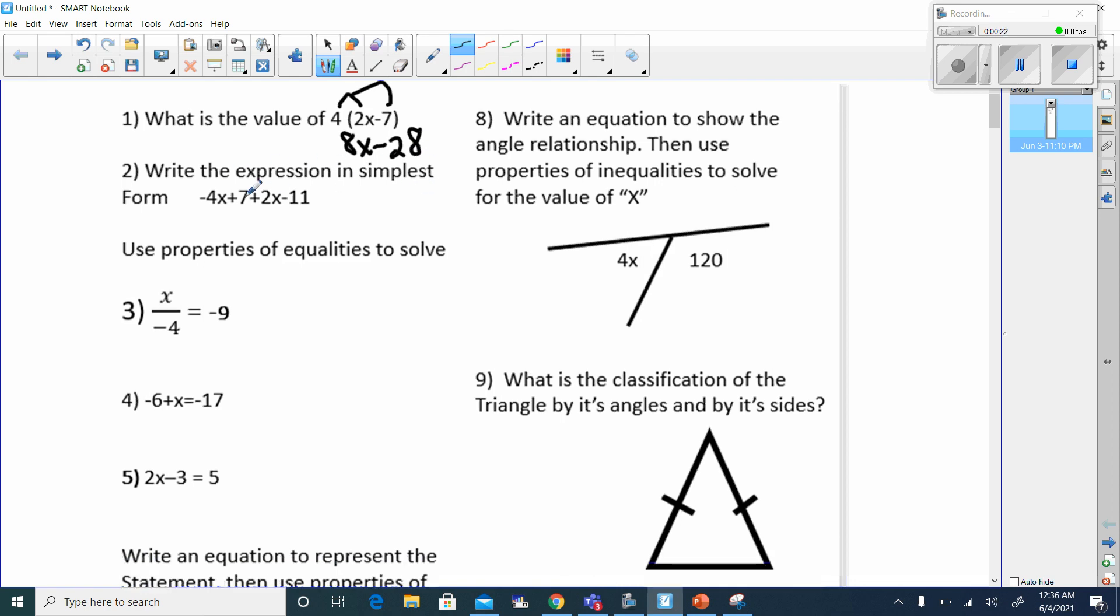Next, write an expression in simplest form. You combine the like terms. Negative 4 and positive 2 make negative 2x, and positive 7 and negative 11 make minus 4, because big number minus small number, keep the sign of the big number.